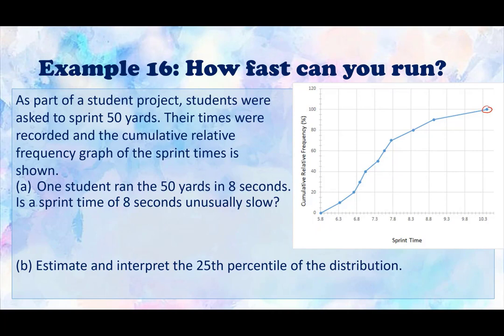Okay, so let's look at our example. Example 16, how fast can you run? As part of a student project, students were asked to sprint 50 yards. Their times were recorded and the cumulative relative frequency graph of the sprint times is shown. One student ran 50 yards in 8 seconds. Is a sprint time of 8 seconds unusually slow?